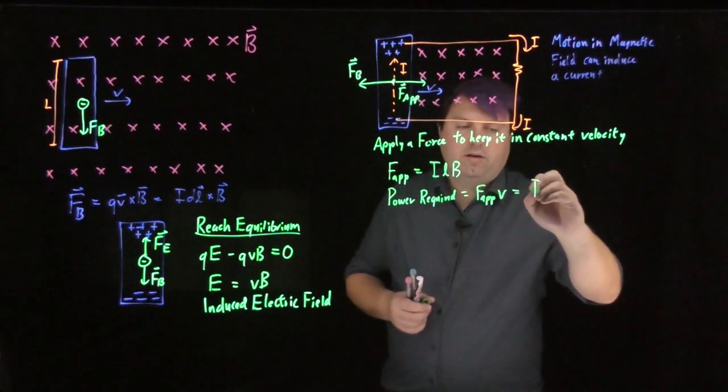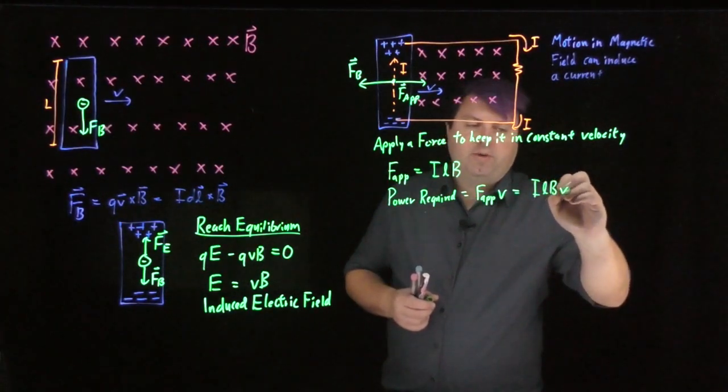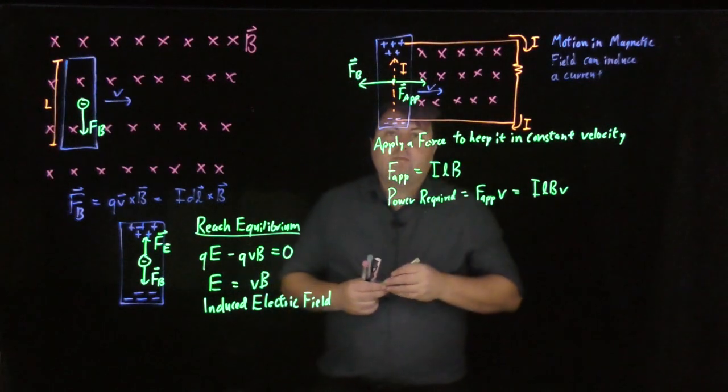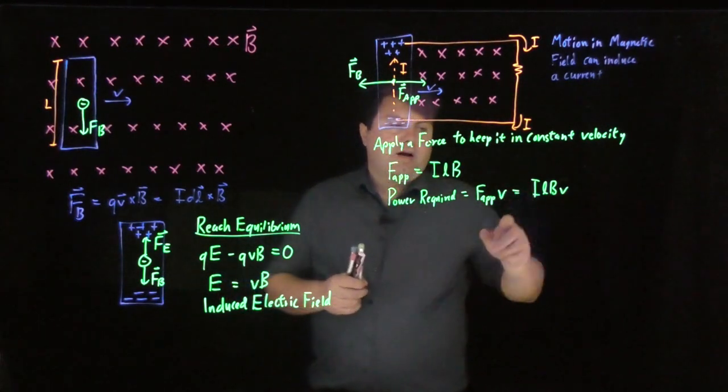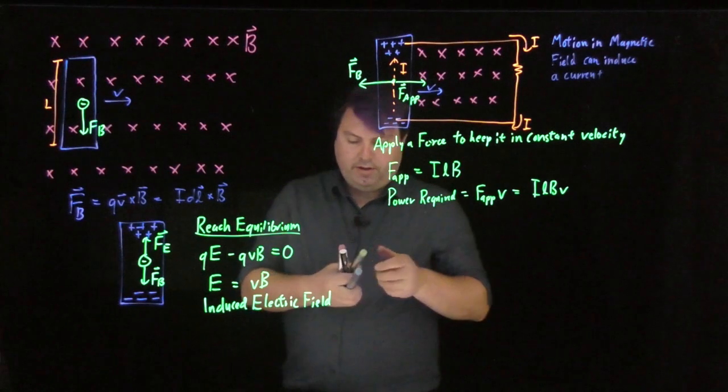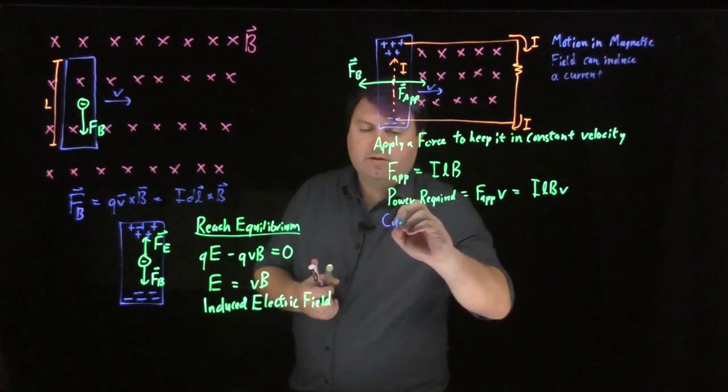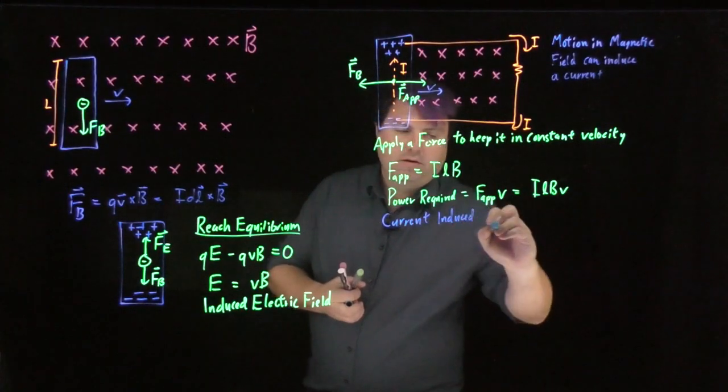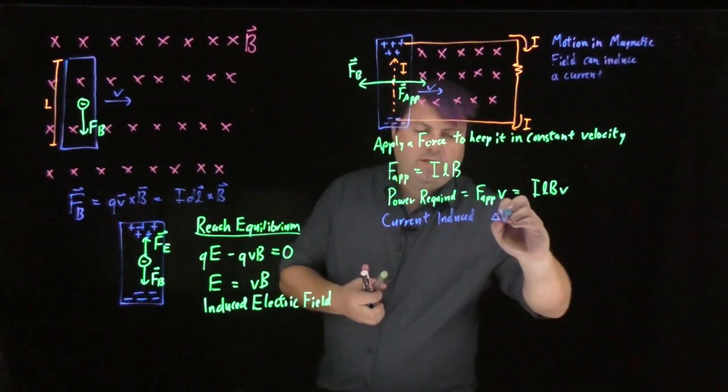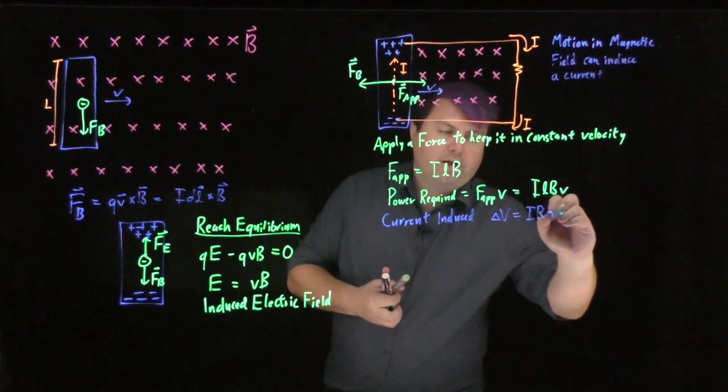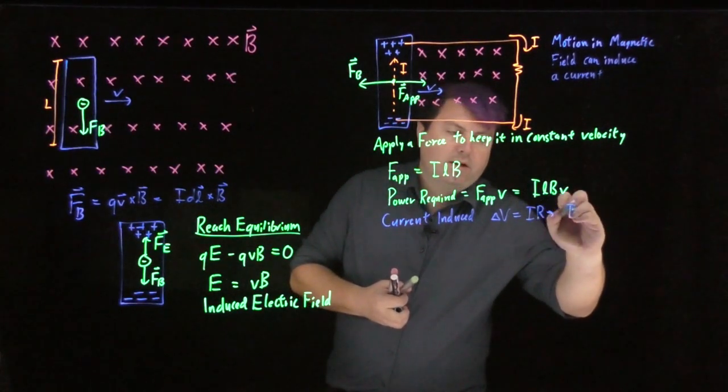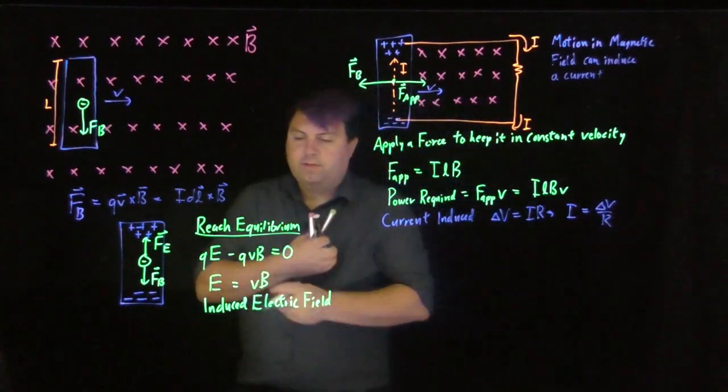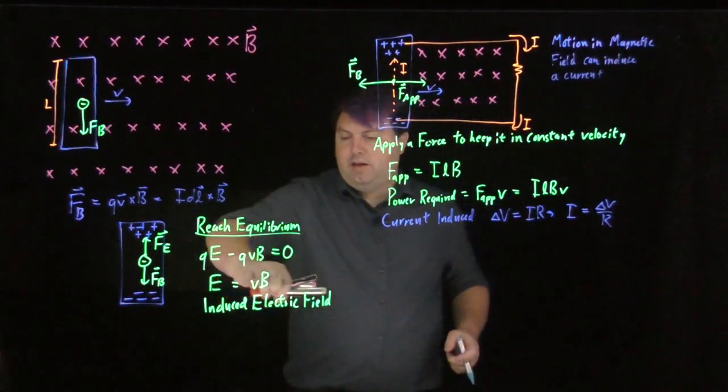Well, what is I, the current induced from this? We know that delta V equals IR or that I is equal to delta V over R.